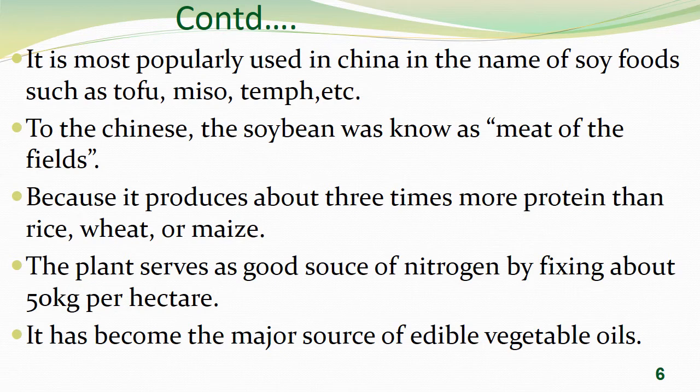Soybean is most popularly used in China in the form of soya foods like tofu, miso, and tempeh. To the Chinese, soybean was known as the 'meat of the fields' because it produces about three times more protein than rice, wheat, or maize. The plant is also a good source of nitrogen, fixing about 50 kg per hectare.